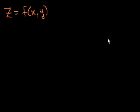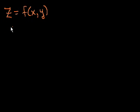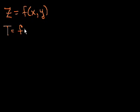The easiest one to imagine is a scalar field. What's a scalar field? One that I find fairly intuitive is temperature in a three-dimensional room. Let's say that the temperature in a room is a function of where I am — a function of my x, y, and z coordinates.